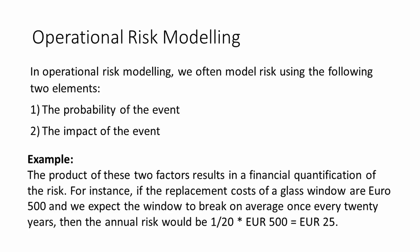In operational risk modeling, we often model risk using two elements: the probability of the event and the impact of the event. This results in a financial quantification of the risk. For instance, if the replacement cost of a glass window is 500 euros and we expect the window to break on average once every 20 years, then the annual risk would be 1 divided by 20 multiplied by 500 euros, which equals 25 euros. Insurers and banks use this type of calculation for capital buffering purposes.